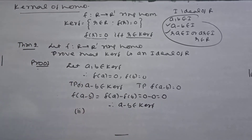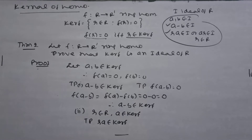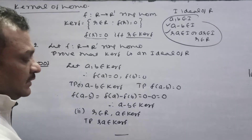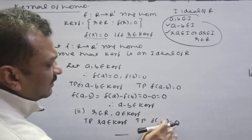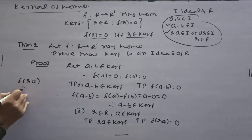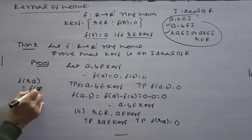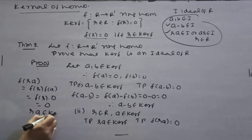Second condition: let r belong to R and a belong to kernel of f. We show ra belongs to kernel of f, meaning f(ra) = 0. Since f is a ring homomorphism, by definition f(ra) = f(r) · f(a). Since a belongs to kernel F, f(a) = 0, so f(ra) = f(r) · 0 = 0. Similarly, ar also belongs to kernel F. Both conditions are satisfied, so kernel F is an ideal of R.